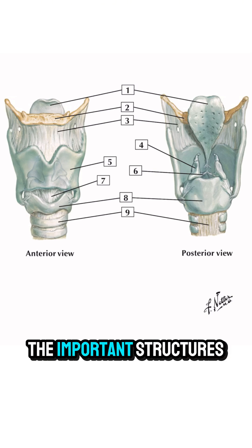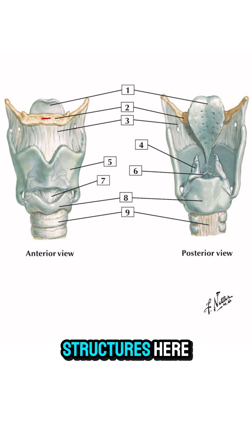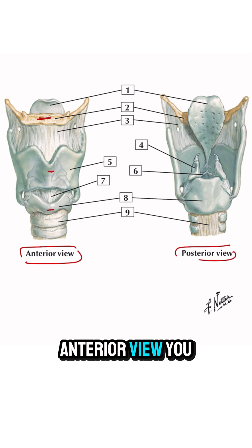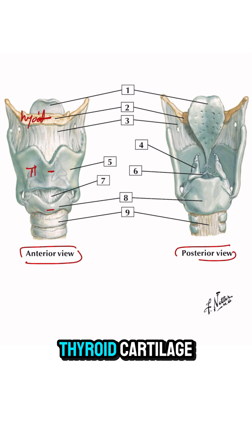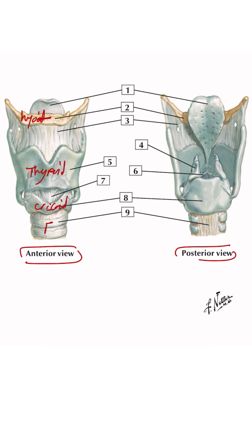In this video, I'll try to identify the important structures of the larynx. Starting with the three key structures here — this is an anterior view, and that's a posterior view. From the anterior view, you can see the hyoid bone on the top, the thyroid cartilage, the cricoid cartilage, and finally the trachea.